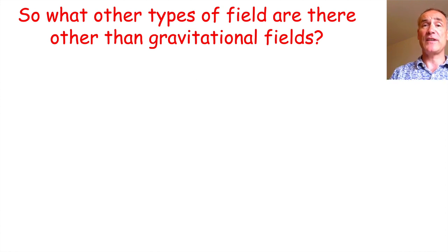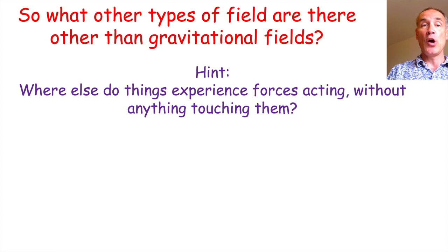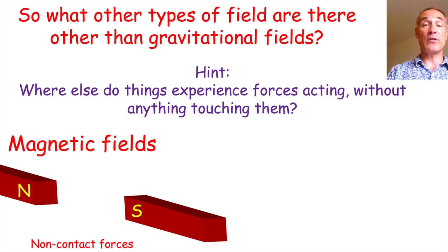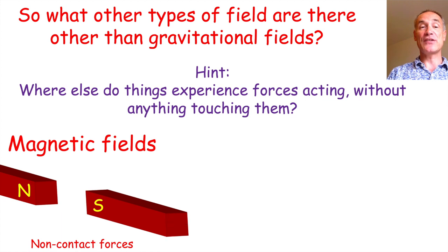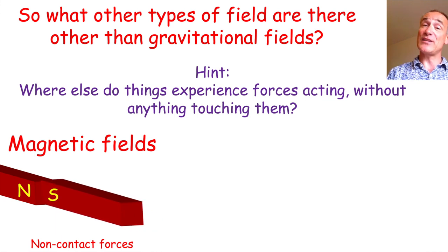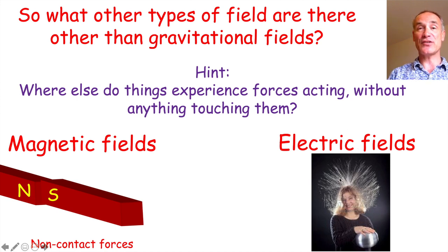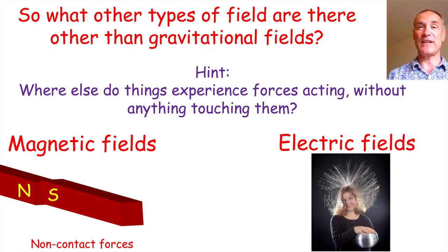So what other types of fields are there other than gravitational fields? Well, where else do objects experience a force without anything touching them? The first is a magnetic field because one magnet can be attracted to another. The other type is electric fields, where charged particles experience a force — you can see the hair has been charged up and so it repels. We're not studying electric fields but it's worth knowing the three types: gravitational fields, magnetic fields, and electric fields.